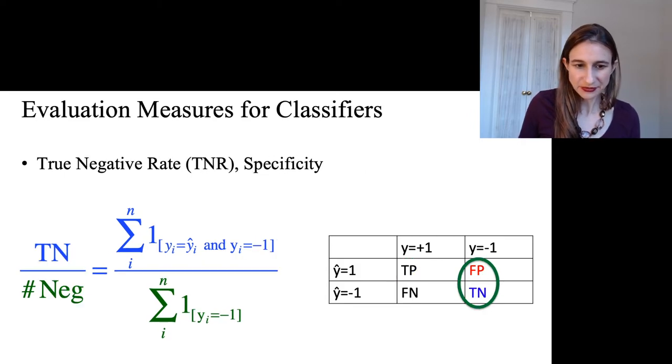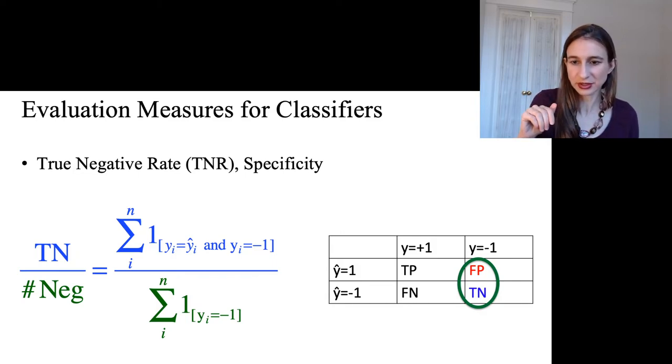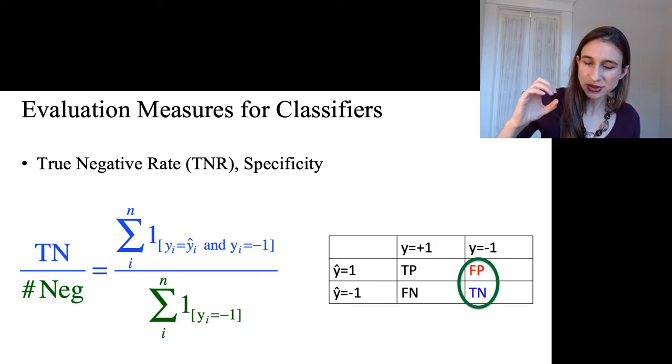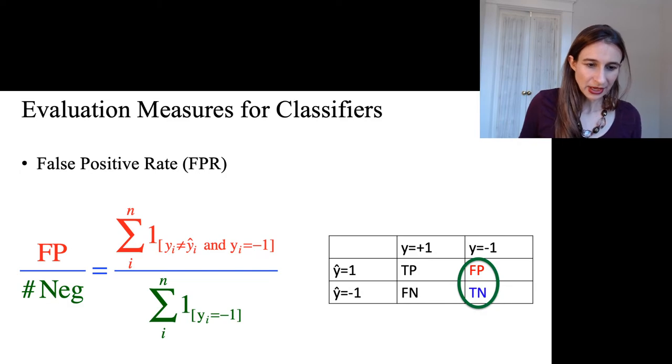And then the specificity is also called the true negative rate, and that's the fraction of negatives that are true negatives. So here again, I've used the green circle to illustrate the denominator in that fraction, and then true negatives is in blue. The false positive rate is the fraction of negatives that were false positives. So it's the rate of false positives.